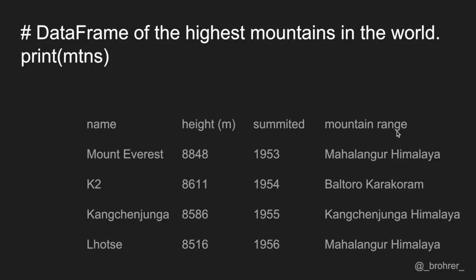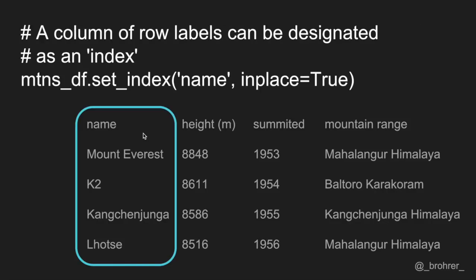In Pandas data frames, each row also has a name. By default, this label is just the row number, counting starting at zero. However, you can set one of your columns to be the index of your data frame, which means that its values will be used as the row labels. We'll set our name column as our index.